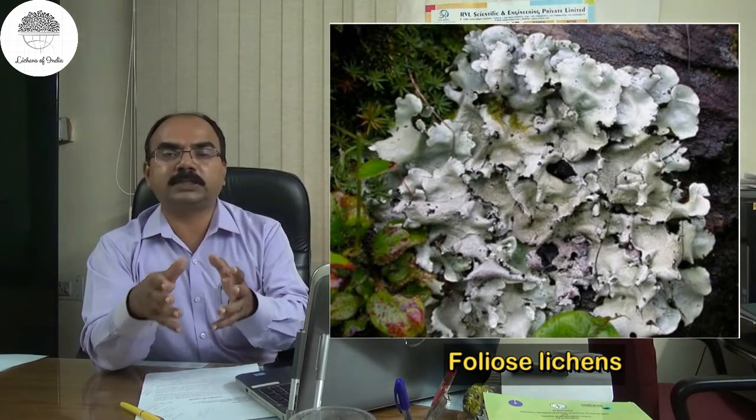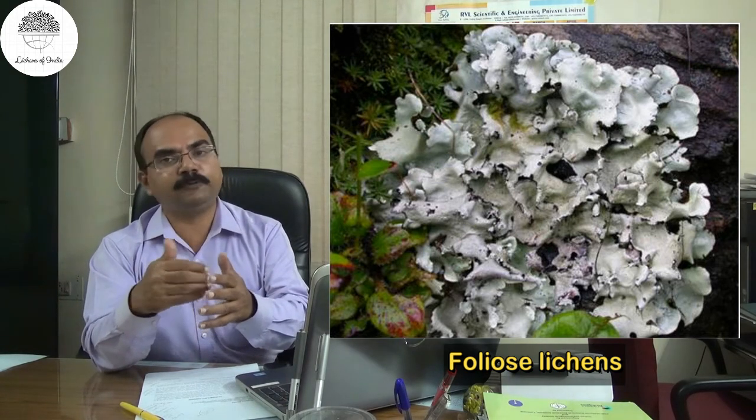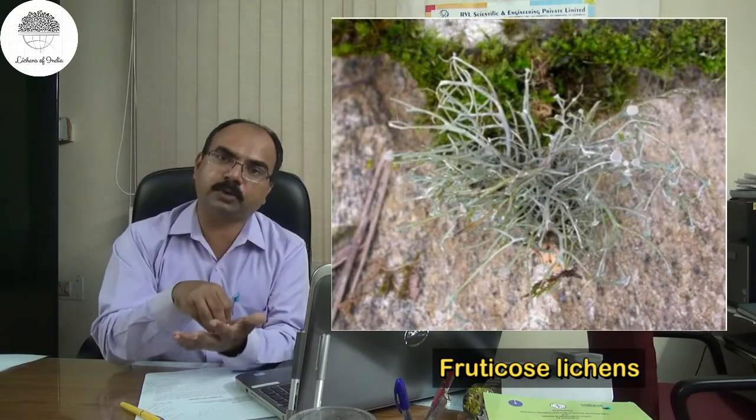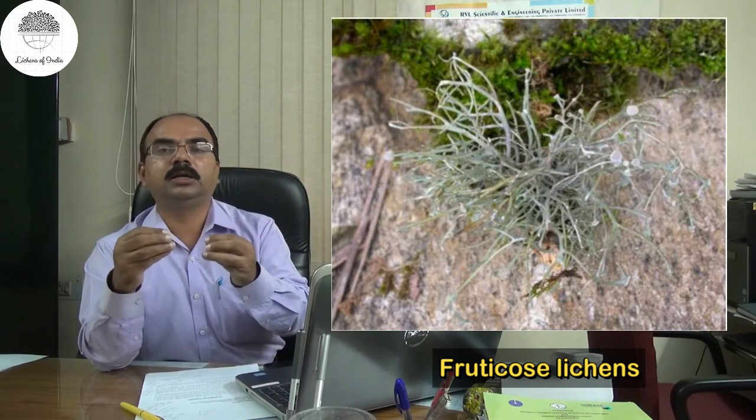Foliose lichens have a loose, leafy margin with dorsal-ventral differentiation and can sometimes be removed from the substratum. Fruticose lichens are bush-like, attached to the substratum at one point with the rest hanging or erect. Lichens are also very colorful — white, gray, yellow, or bright orange. Beautiful orange lichens such as Xanthoria or Caloplaca are found in the Himalayas, and some lichens are a fluorescent yellow, like Rhizocarpon.